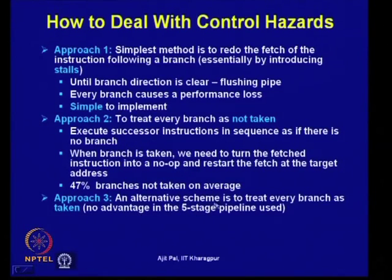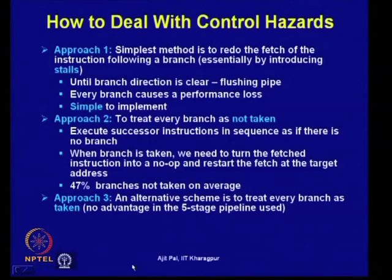The third approach is to treat every branch as taken. The assumption is all branches will be taken. However, for our simple pipeline, even when predicting taken, the branch outcome is known only at the execution stage. So there is no gain — no advantage — for the 5-stage simple pipeline we are discussing. There is some performance gain only when the branch is considered not taken.